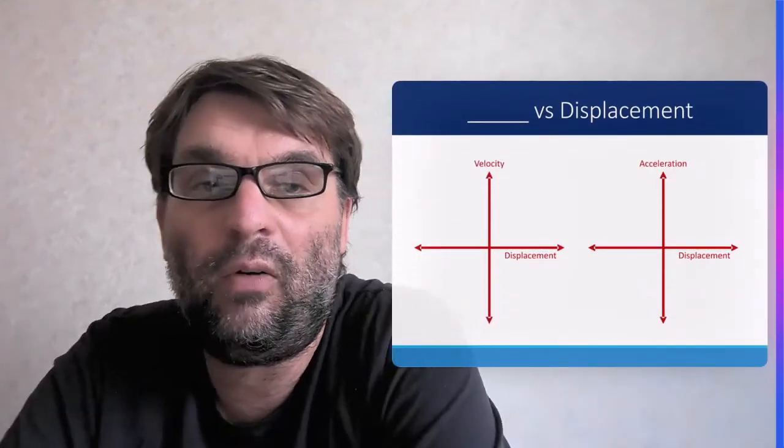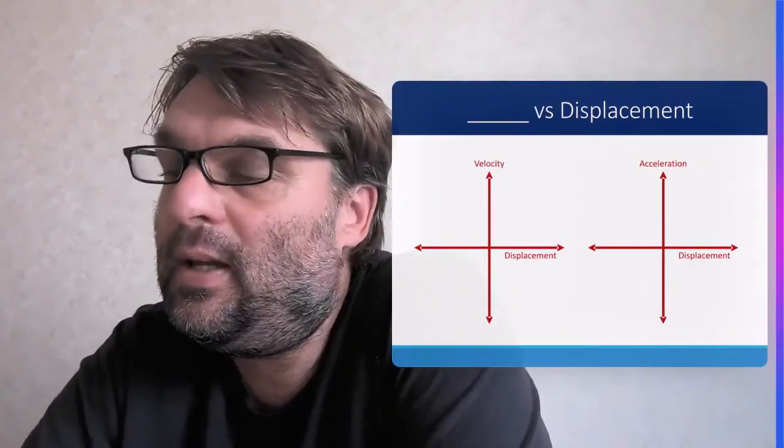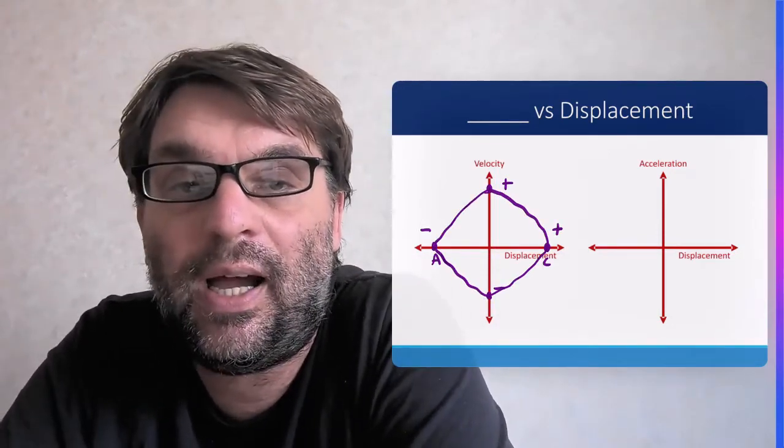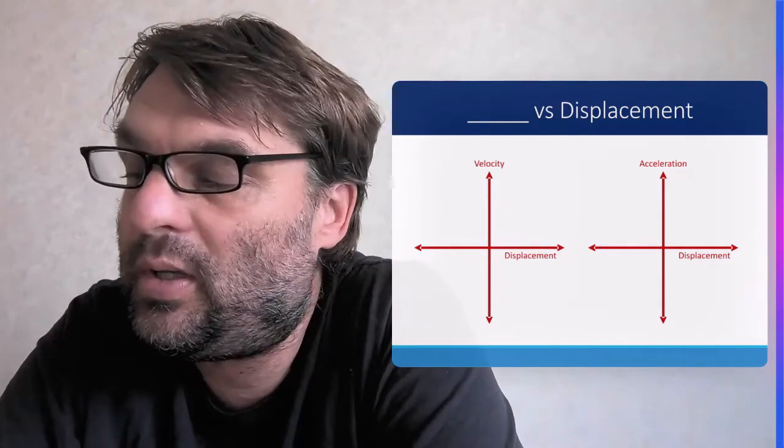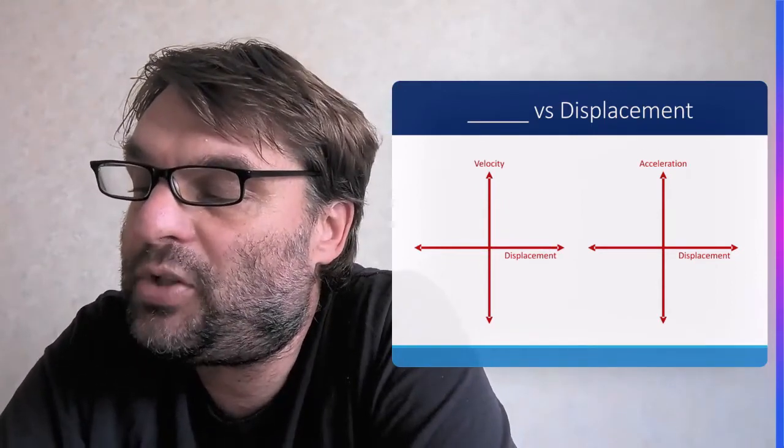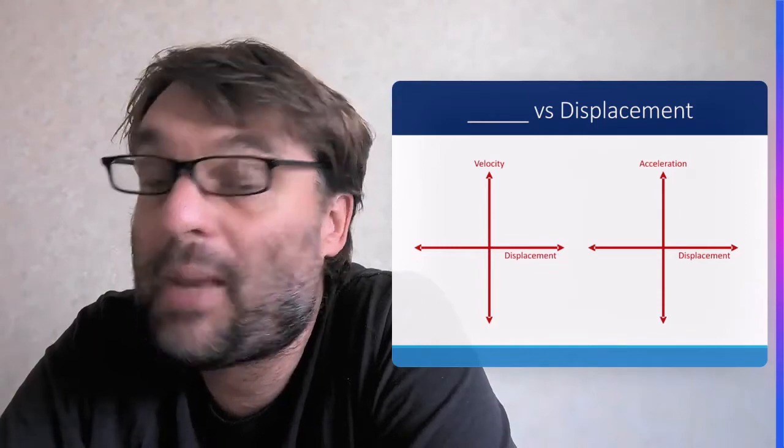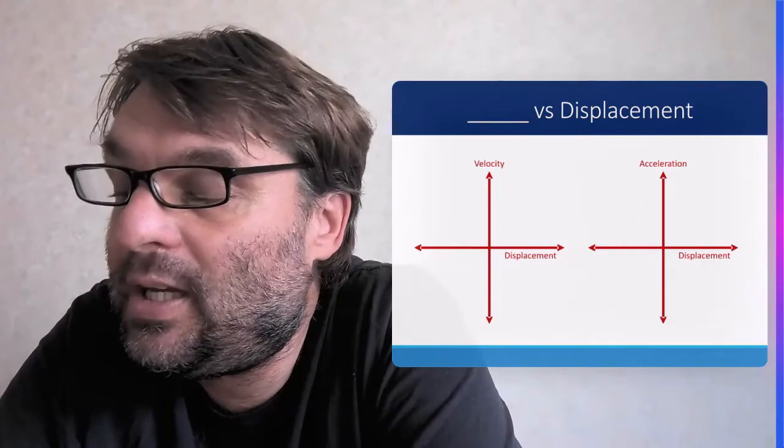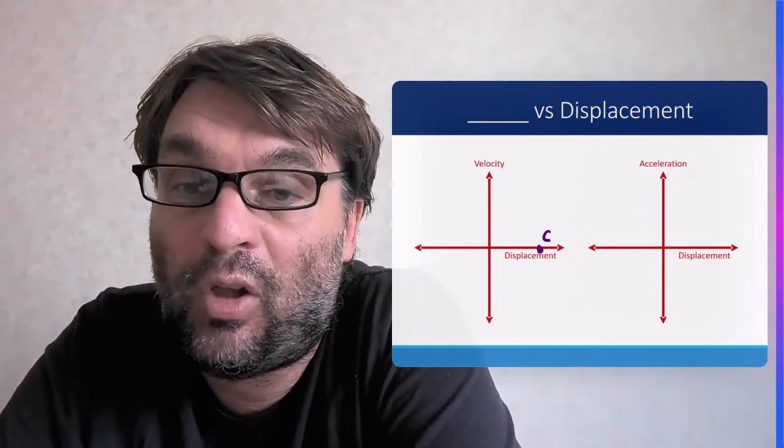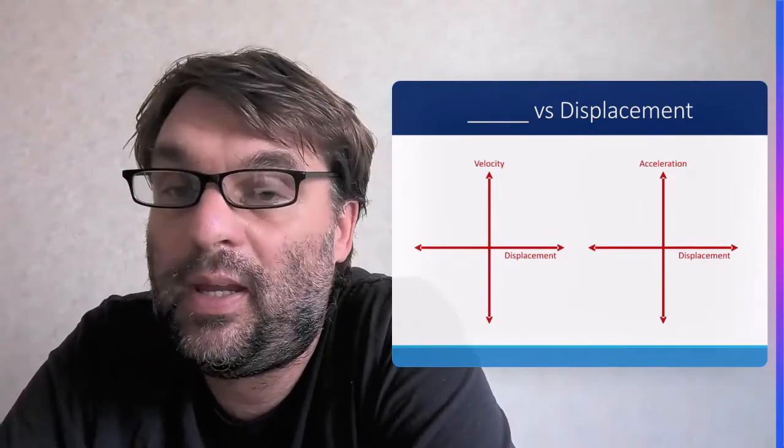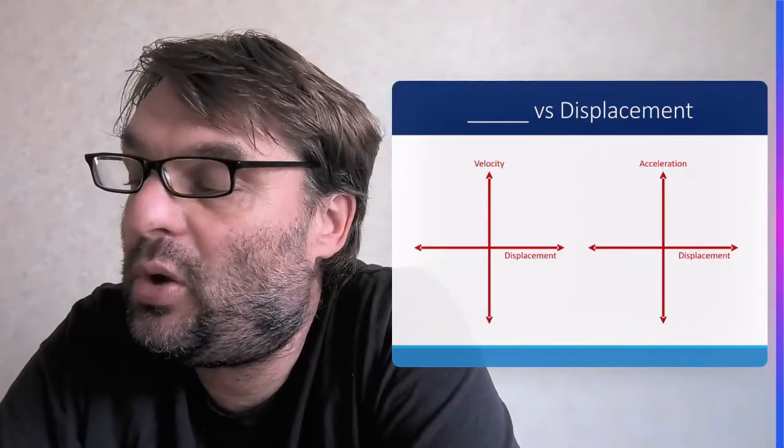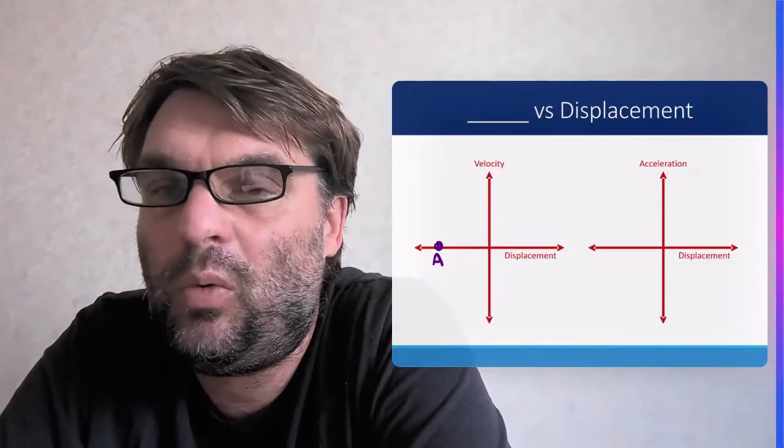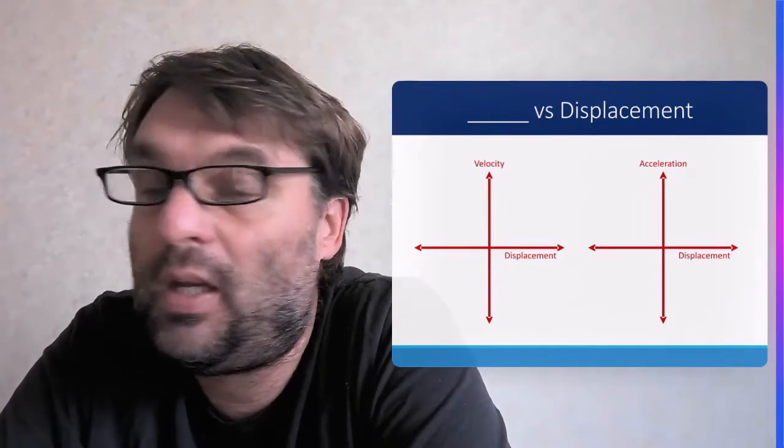In terms of velocity displacement, the maximal velocity is at point zero in terms of displacement. The minimum velocity is at the maximum displacement. Point C, I guess you'd call that on the example we had. The minimum velocity will also be when displacement is zero. And also point A, the maximum negative displacement, will also be when velocity is zero.